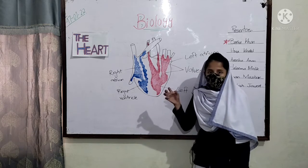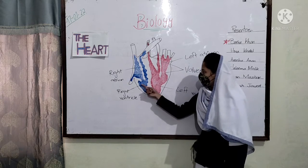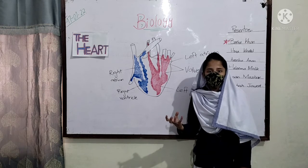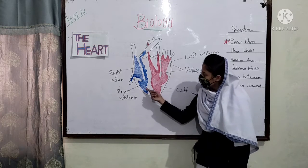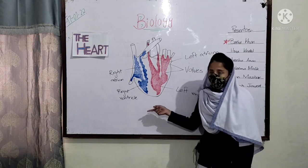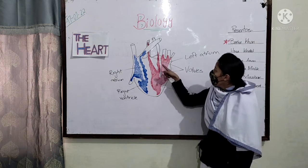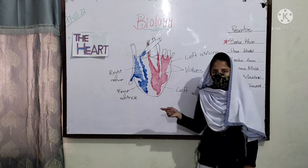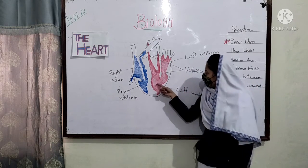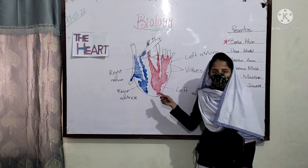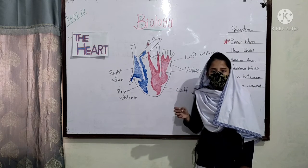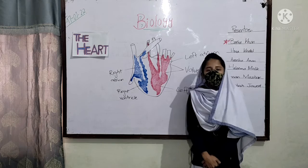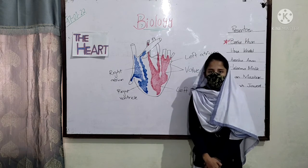When the right atrium pumps, it pushes the blood to the right ventricle, and when the right ventricle pumps, it pushes the blood to the lungs. When the left atrium pumps, it pushes the blood to the left ventricle, and the left ventricle pumps the blood to all body parts. Our heart acts as a double pump.